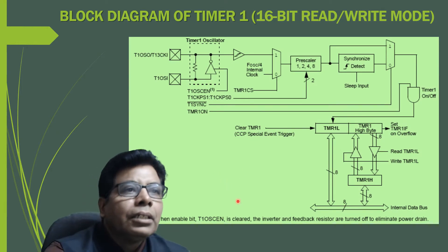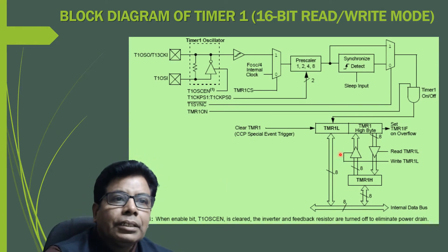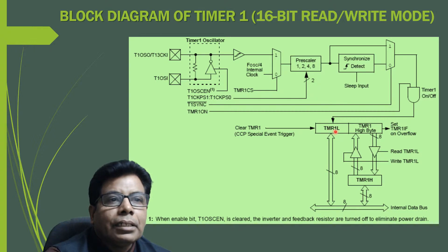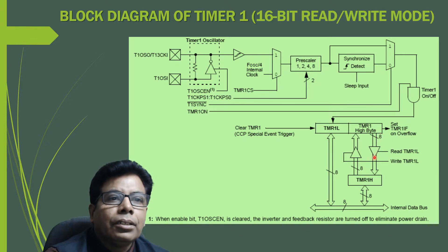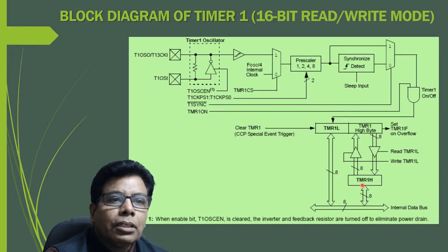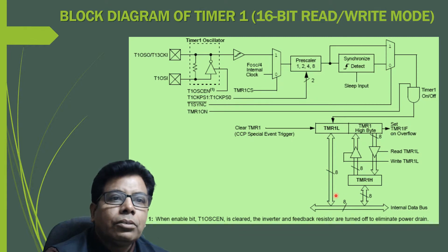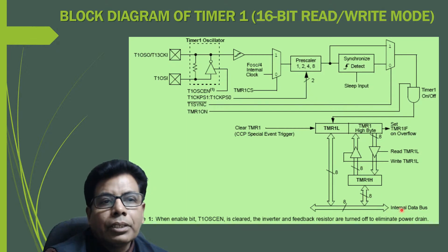As shown in the block diagram, TMR1L and the Timer 1 high byte buffer are each 8 bits. When a 16-bit operation is required, the 8 bits from TMR1L and the 8 bits from the high byte buffer are read together on the data bus.